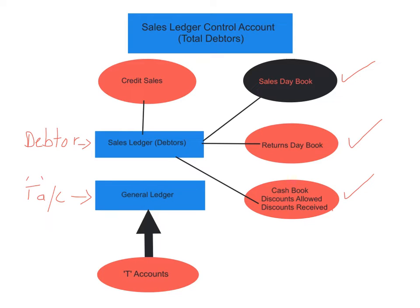The sales ledger control account can be thought of as a total debtors account. It adds up all the balances carried down and brought down of our debtors found in the sales ledger, and then uses information from the books of original entry — the sales day book, returns day book, and cash book — to check against those balances. The chief accountant can check for fraud, theft, or errors by ensuring the balances carried down and brought down match the information from the books of original entry. If they don't match, either a mistake was made or money has gone missing.